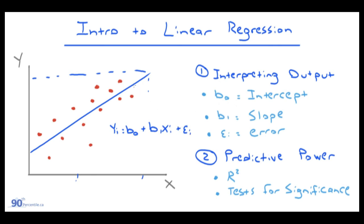Linear regressions are typically done in Excel and some other types of software. All we're doing is drawing a line of best fit for the data and analyzing whether or not this line actually has predictive power — so if it's actually useful for creating forecasts. The line we create follows the equation: yi equals the intercept, plus b_i (the slope), times x_i (our x value), plus an error term.